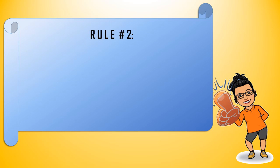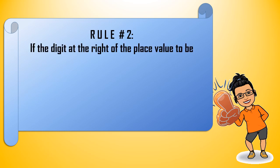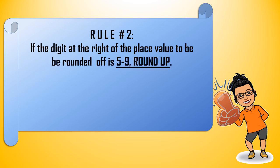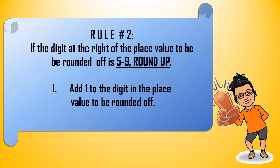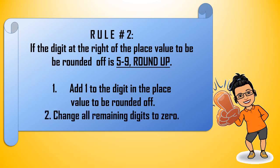Let's talk about rule number 2. If the digit at the right of the place value to be rounded off is 5 to 9, we round up. How do we round up? We add 1 to the digit in the place value to be rounded off, and then we change all remaining digits to 0.